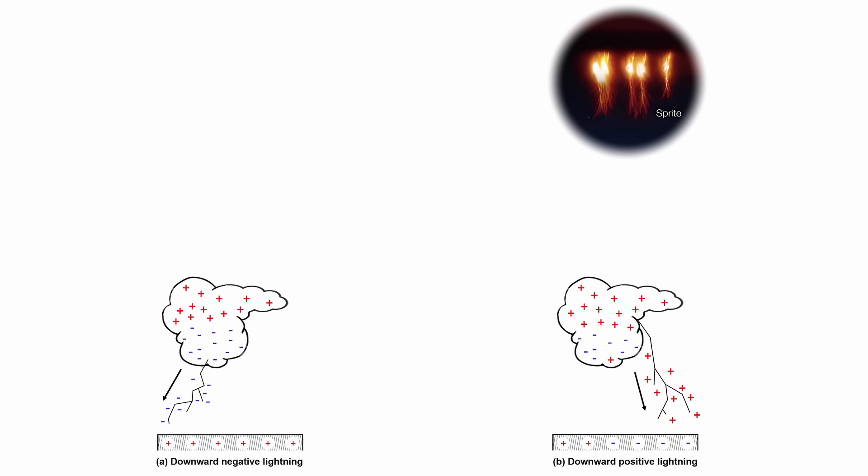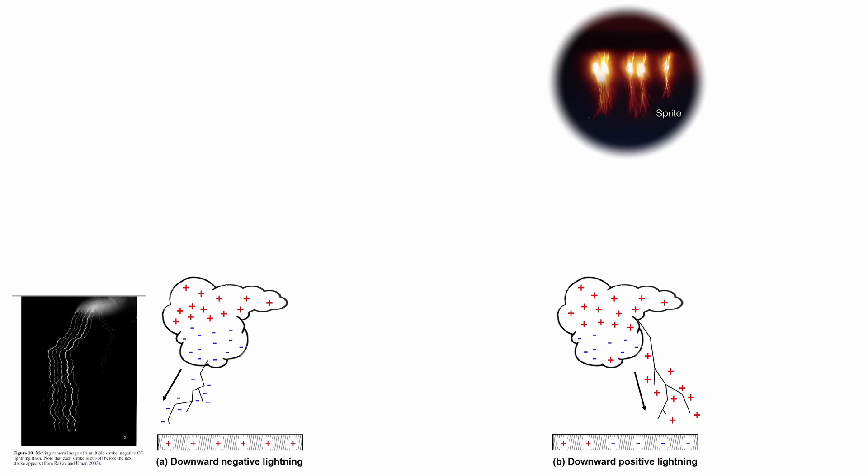This distinction might hinge on the fact that negative flashes often feature multiple strokes, each with a current cut-off and no continuing event. In contrast, positive flashes typically exhibit a single stroke followed by a sustained continuing current. The physical implication is that the middle atmosphere responds to negative cloud-to-ground flashes is impulsive and brief, while that to positive flashes is prolonged and sustained.